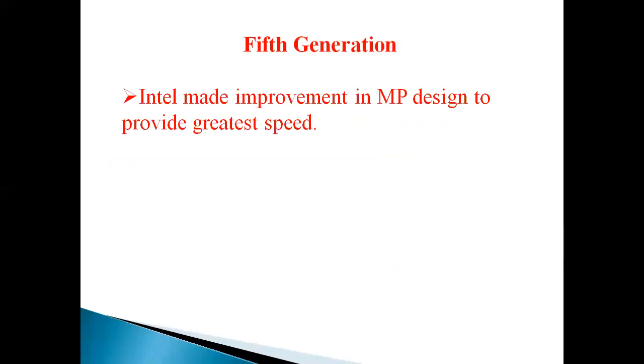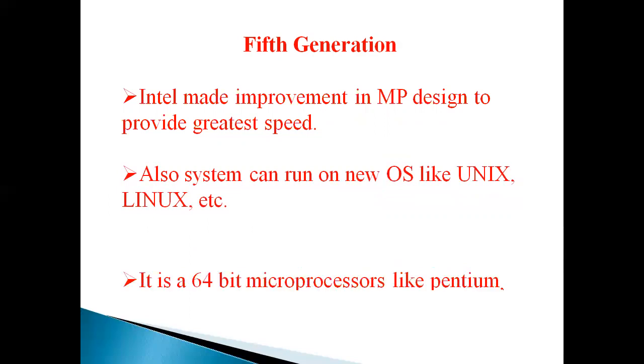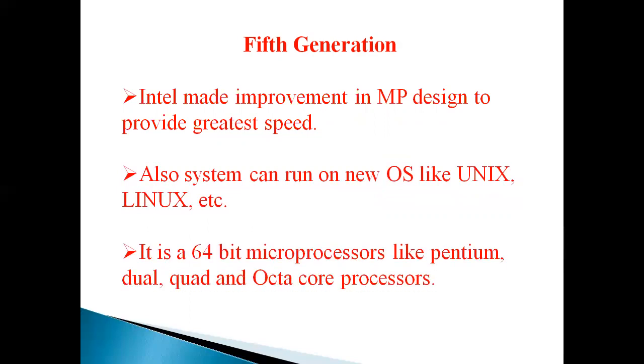Fifth generation: Intel made improvements in microprocessor design to provide greater speed. Also system can run on new OS like Unix, Linux, etc. It is a 64-bit microprocessor like Pentium, Dual-Core, Octa-Core processor. Now it is what we are using. So this is an image of fifth generation computers. Thank you.